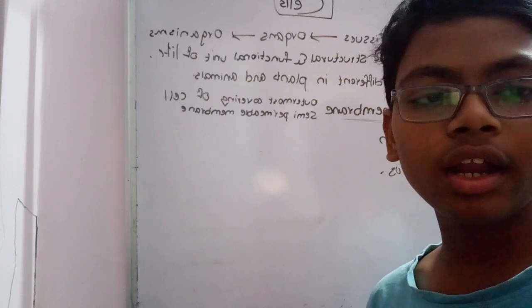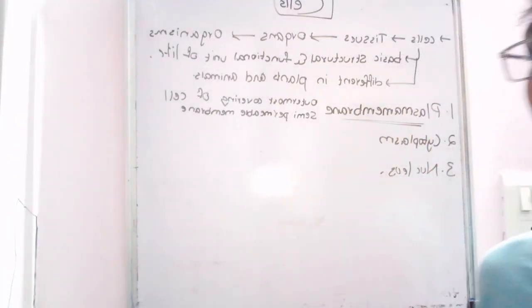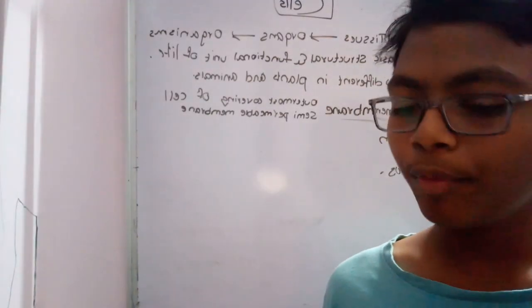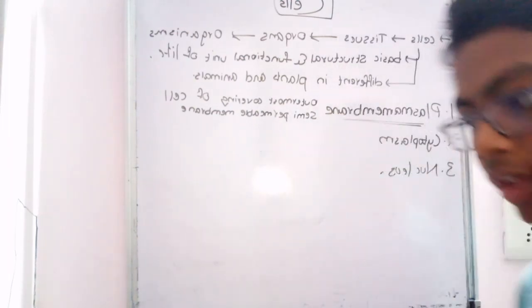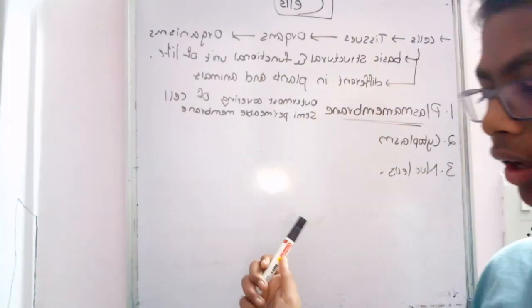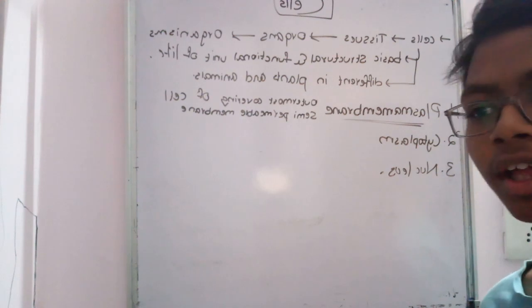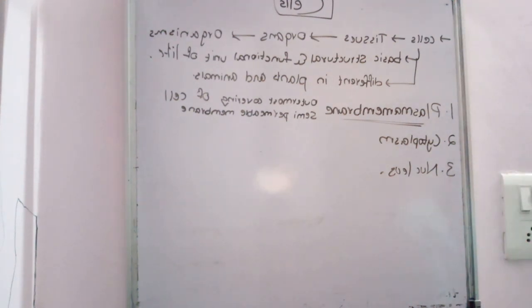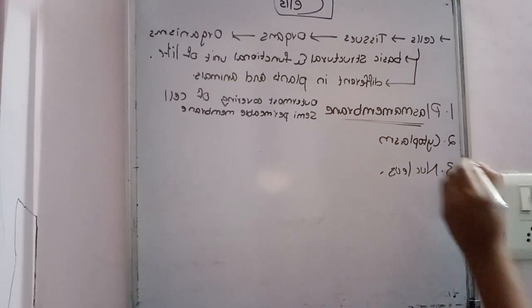The function of the plasma membrane is to allow material to move in and out of the cell. It allows diffusion and controls the movement of materials into and out of the cell. It is the one that decides the entry and exit of materials.